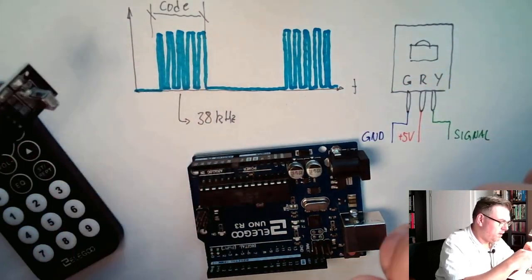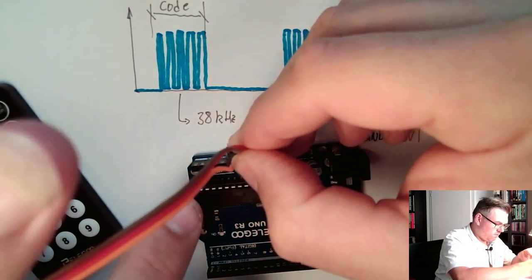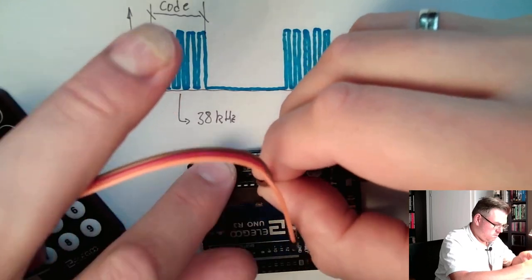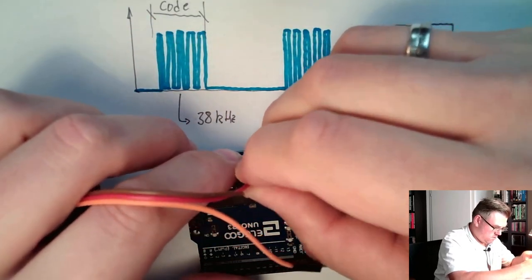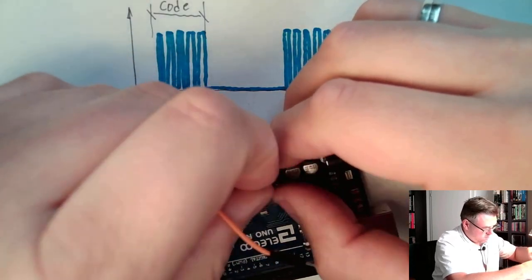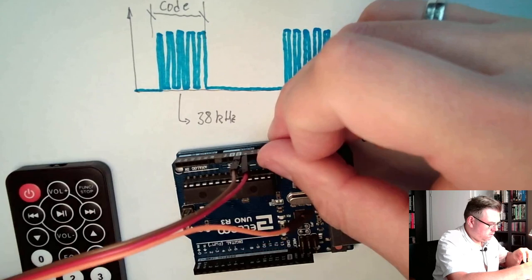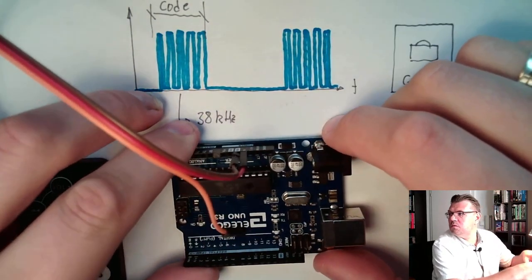So we need to have plus and ground. So plus five volts and ground here. Go in, go in. Ground. And here we are going to use pin number five.